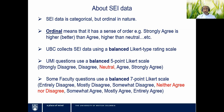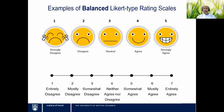The UMI questions use a balanced five-point scale centered around a neutral response — two favorable and two unfavorable categories. Some faculty questions use a balanced seven-point Likert-type scale, again with three unfavorable responses, three favorable, and a neutral response. These are the two balanced scales used at UBC, both with a neutral category and equal response categories on both sides.